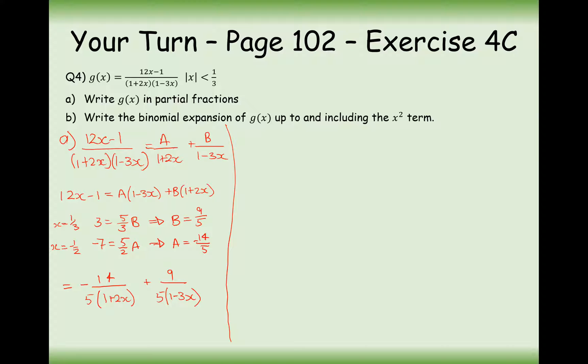Now we've got to work on the binomial expansion of both of these. Let's just do it in this little space down here. We can set this as minus 14 over 5 times 1 plus 2x to the minus 1, plus 9 over 5 times 1 minus 3x to the power of minus 1. Now I'm quite glad that they're both 1s in these brackets here. That means I don't have to take anything out.